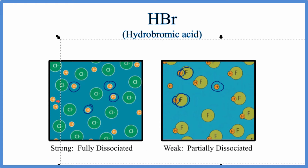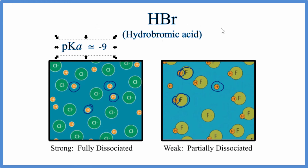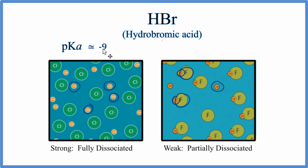Another way we can look at the strength of an acid is to look at what's called the pKa. If we look up the pKa on a table of pKa values, hydrobromic acid is about negative 9. If the pKa value is less than zero, we're looking at a strong acid that will fully dissociate in water. For HBr, we have a pKa of negative 9 — that's certainly less than zero — so it's going to be a strong acid and will fully dissociate in water.